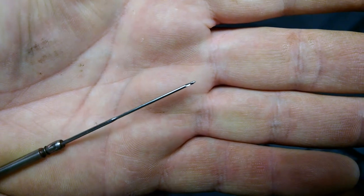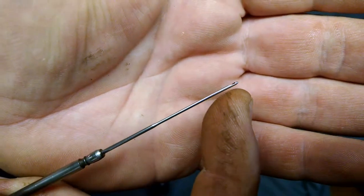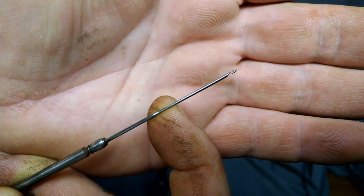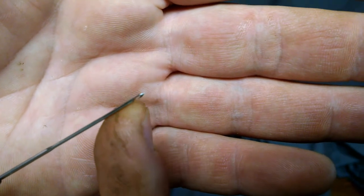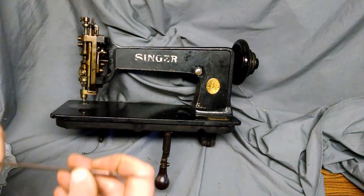Now the important thing is on the needle if you can see here, try to do this with two hands. At the tip there's a hook. Okay now the opening of this hook has to face forward on the machine towards you.